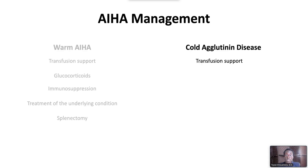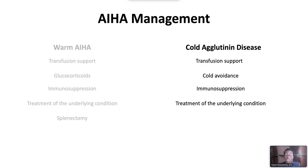In cold agglutinin disease, transfusions should also be performed as indicated, and cold exposure should be avoided. Cold agglutinins do not typically respond to glucocorticoids or splenectomy; therefore, other immunosuppression is recommended, including rituximab alone or in combination with other agents. As with warm antibodies, treatment of the underlying condition is critical to stopping antibody production. Therapeutic plasma exchange can be used as a temporizing measure to quickly remove IgM antibodies while immunosuppressive therapies take effect.